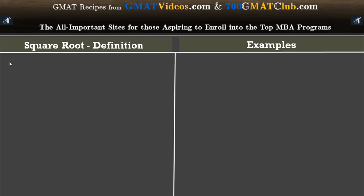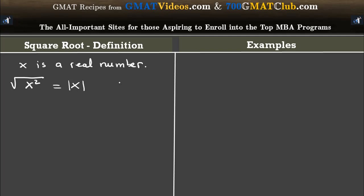So if you're given a real number x, then we say that the square root of x squared is equal to the absolute value of x. This is a mathematical definition. Essentially, if you are given any real number, the square root of that real number is the positive root of that number.